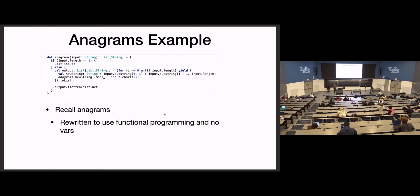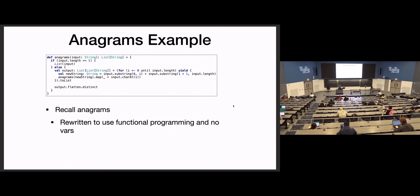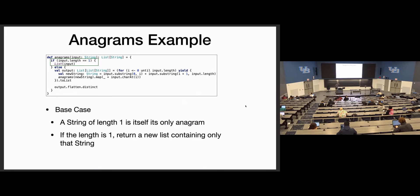Let's revisit anagrams — last time I only got through the test cases and didn't get to go through the code. Here's code that solves anagrams. It's a more complex recursive example using functional programming ideas: first-order functions, functions as parameters. If I gave you the task: write a method that takes a string and outputs a list of strings containing all anagrams of that string with no duplicates — how would you write that?